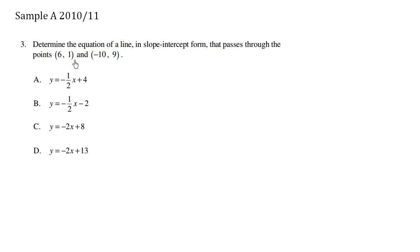Determine the equation of a line in slope-intercept form that passes through the points (6,1) and (-10,9). First let's find the slope. We're trying to find a line equation.